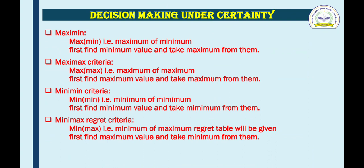Number one: Maximin. In the Maximin criteria, it consists of two parts. First one is Max, and the second one is Min. We keep the second word in brackets. It is nothing but Maximum of Minimum.